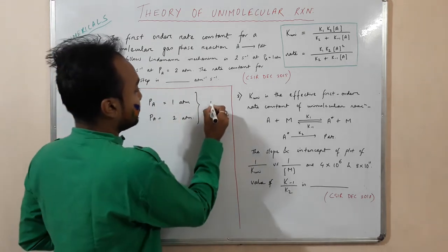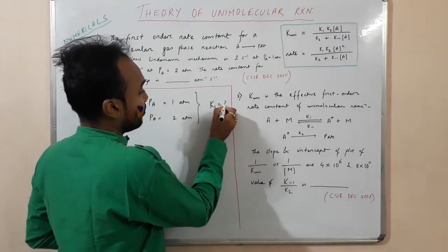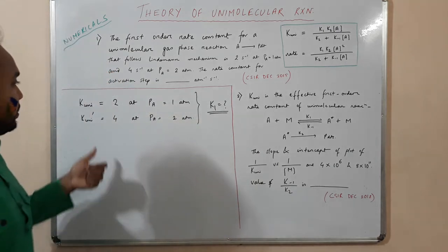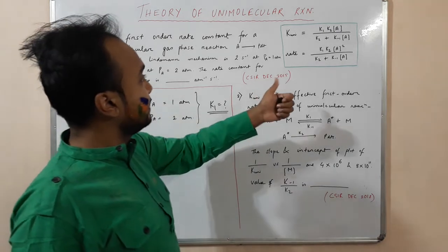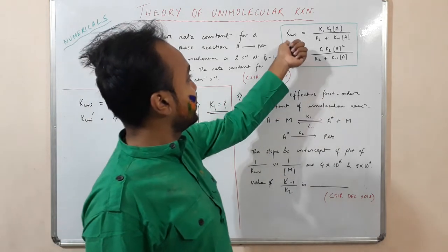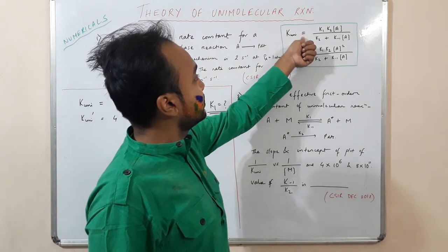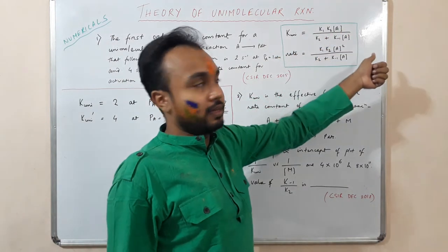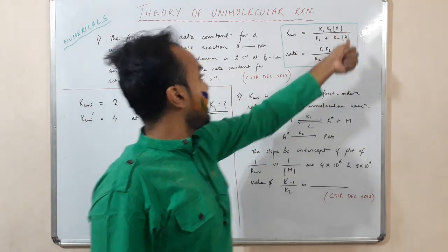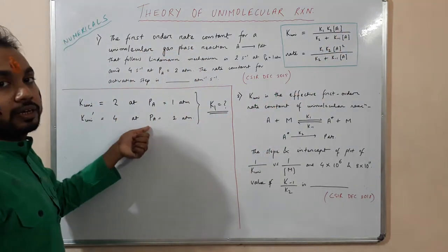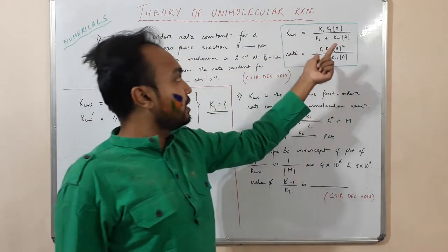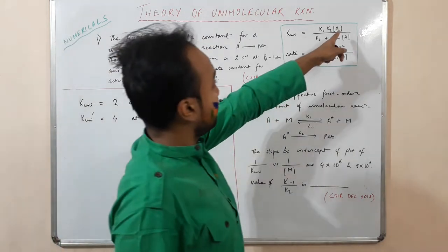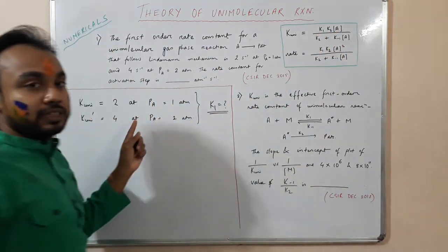As seen in the last video, K_unimolecular = K₁·K₂·[A] / (K₂ + K₋₁·[A]). Here [A] is proportional to pressure, so we can replace the concentration term with the pressure term.